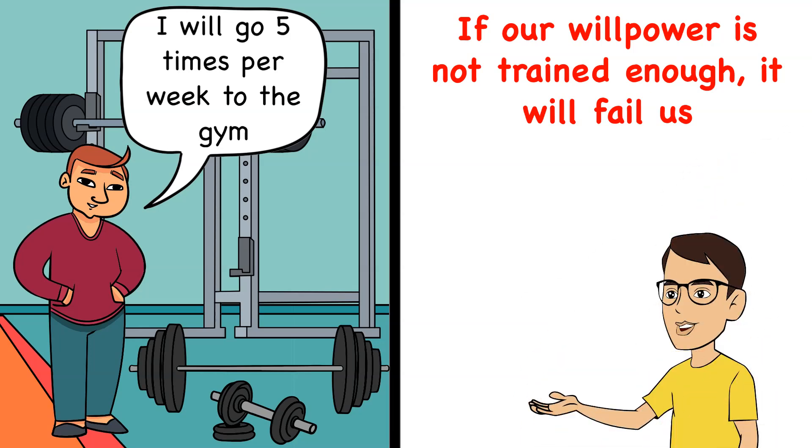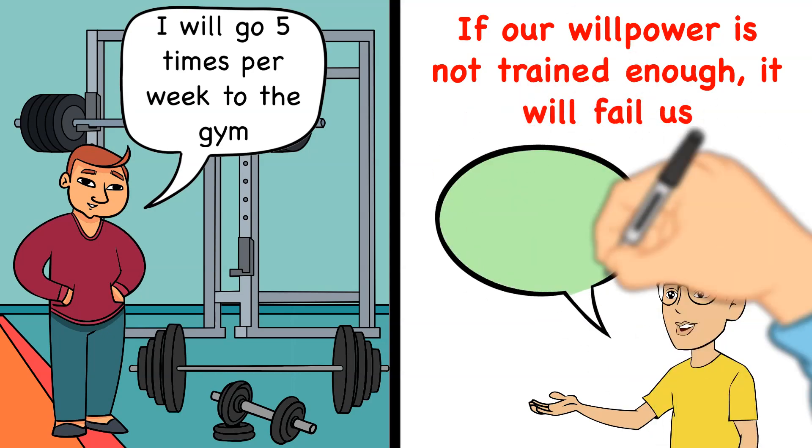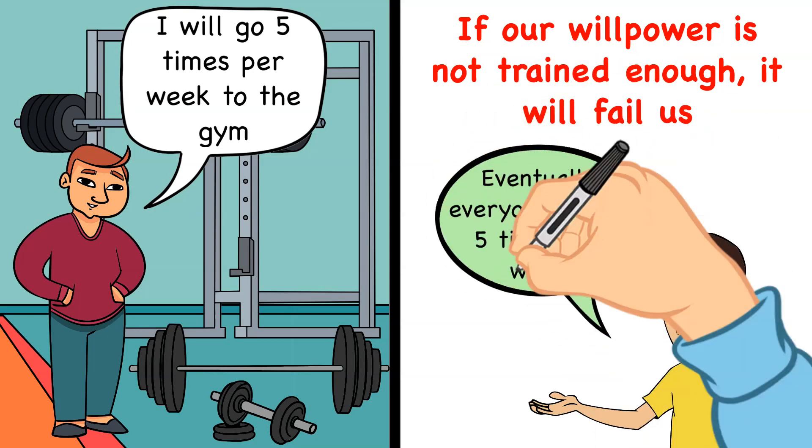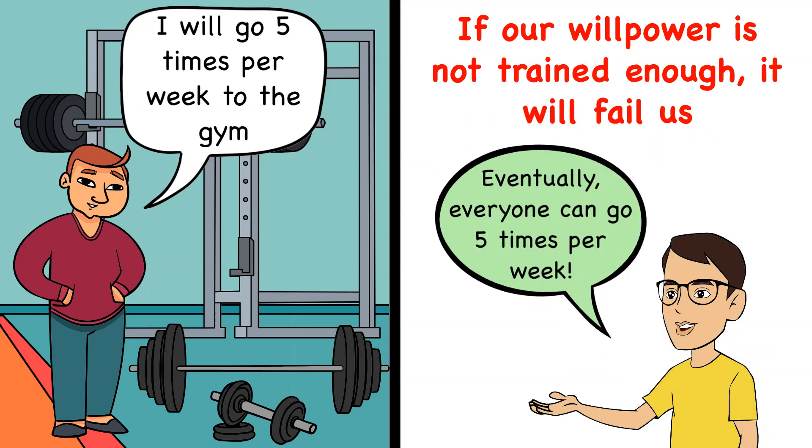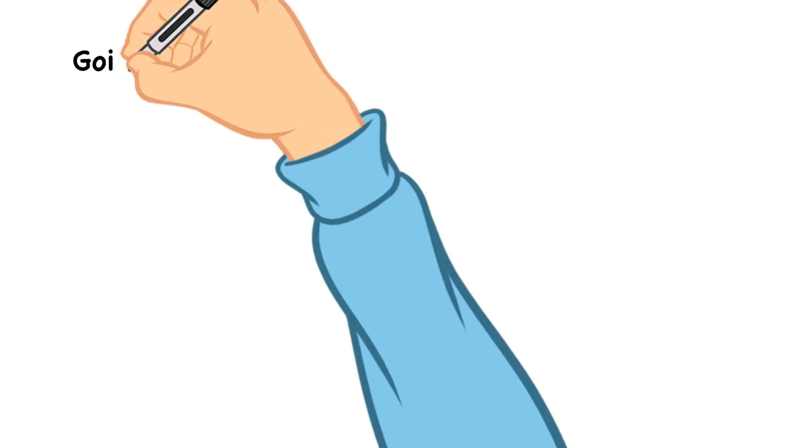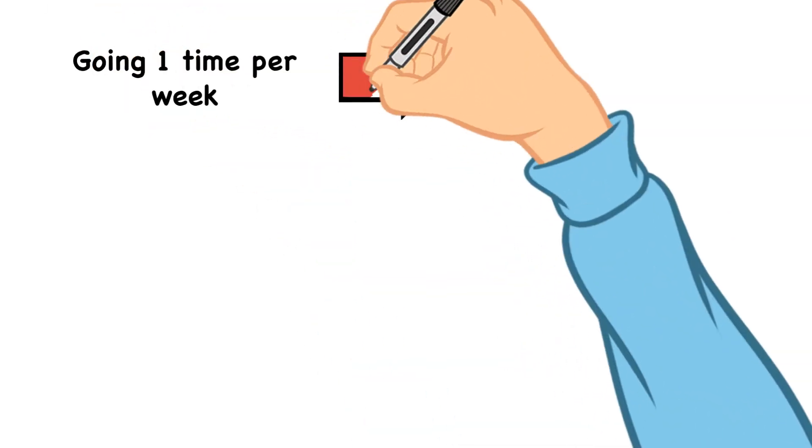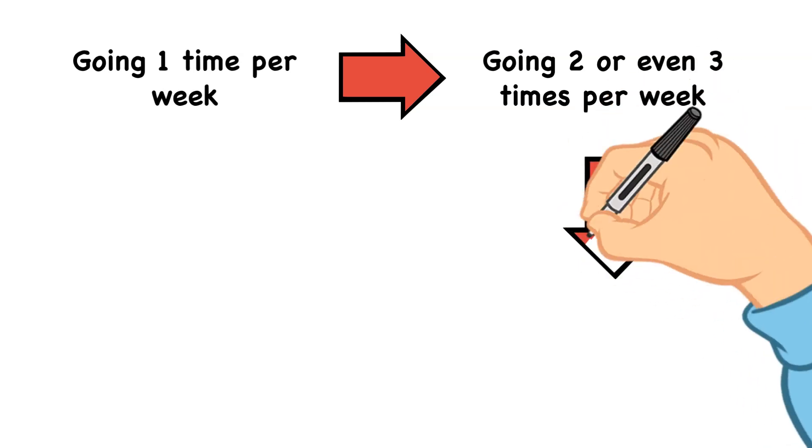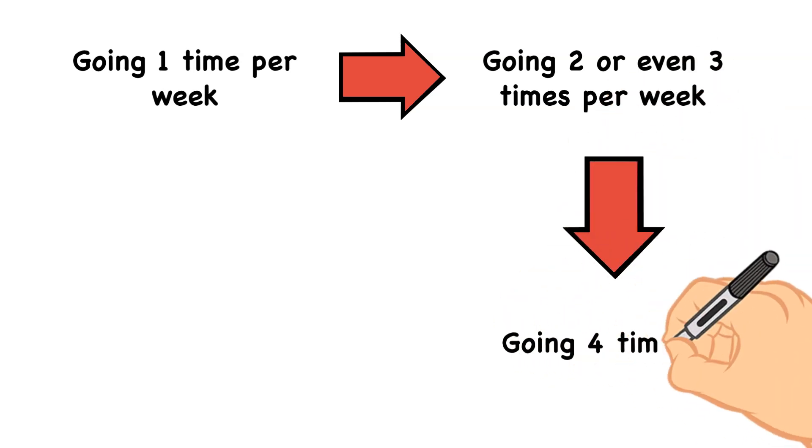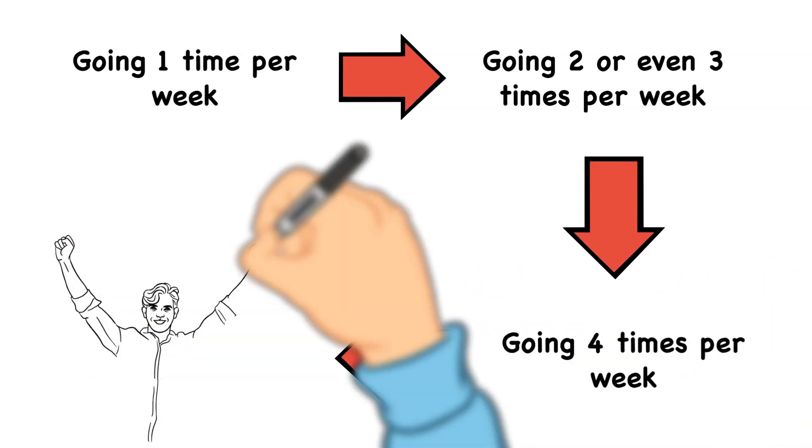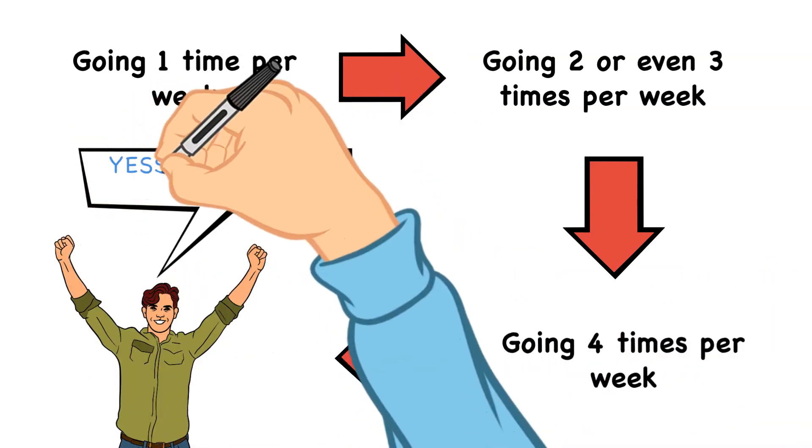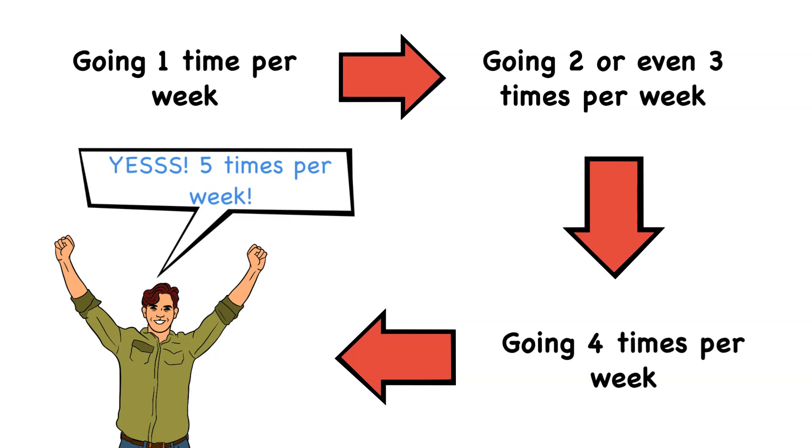But by reframing the same goal and doing a little bit more than we think we can, gradually we will eventually go five times per week to the gym. Doing a little bit more means going one time per week, then maybe two or even three times per week. This will go on and on, and eventually, doing a little bit more will mean going from four times per week to five times per week, which was our initial goal.